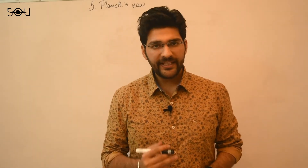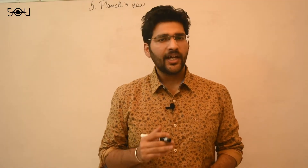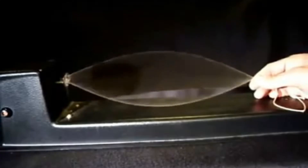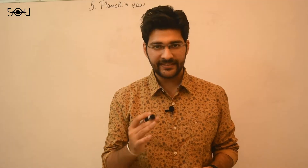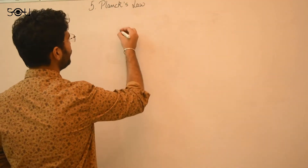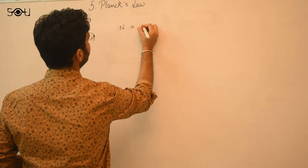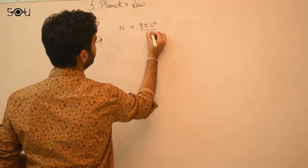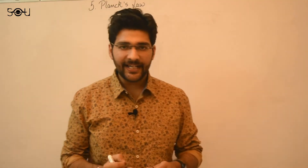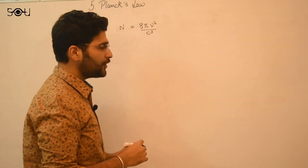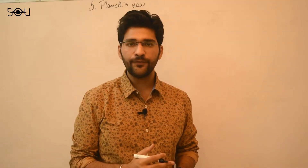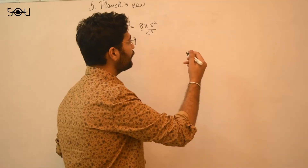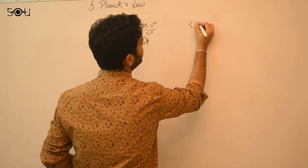Planck analyzed the problem deeply and also went through the work done by Rayleigh and Jeans. Rayleigh and Jeans had assumed the blackbody radiation to be composed of standing waves inside a cubical box, and they calculated the number of modes of these standing waves, coming up with the result: number of modes = 8π ν² / c³. They assumed these standing waves are created by oscillating particles called harmonic oscillators. From the laws of classical thermodynamics, the average energy of each harmonic oscillator came out to be KT, where K is Boltzmann's constant and T is the temperature.